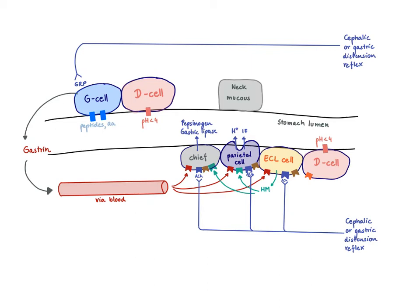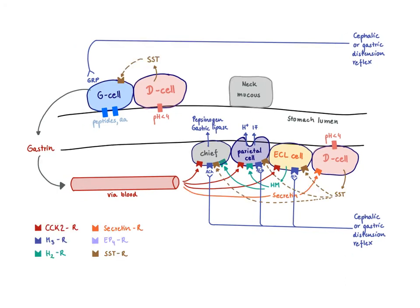Acetylcholine also acts on the chief cell to make more pepsinogen and gastric lipase, and can stimulate the ECL cell to make more histamine. When the stomach empties and the intestinal phase starts, we need to ensure that acid secretion is also inhibited.